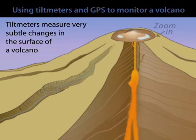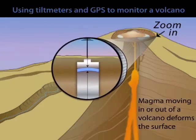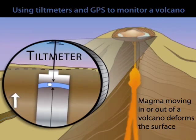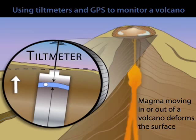One of the instruments we use to measure deformation is a tiltmeter. A tiltmeter measures very subtle changes in the surface of the earth as magma accumulates beneath the station or moves upward, for example.